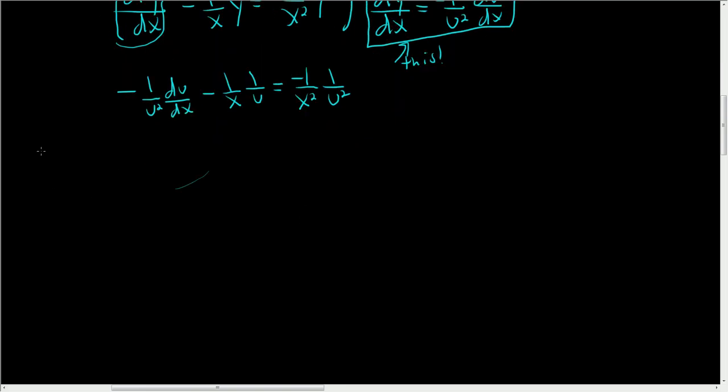So what we'll do here is we'll multiply both sides by, well, we want to make this linear. Let me see if I can erase this line. Let's see. Oh, look, it erases. Okay, so we want to multiply both sides by, well, we need to get rid of this. So we'll multiply by negative u². All right, that gets rid of the negative and it gets rid of the fractions.